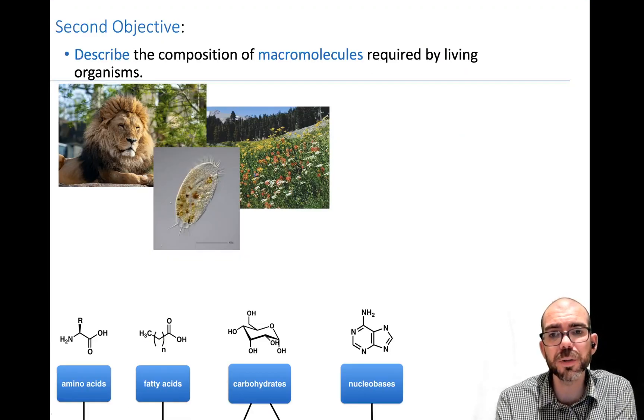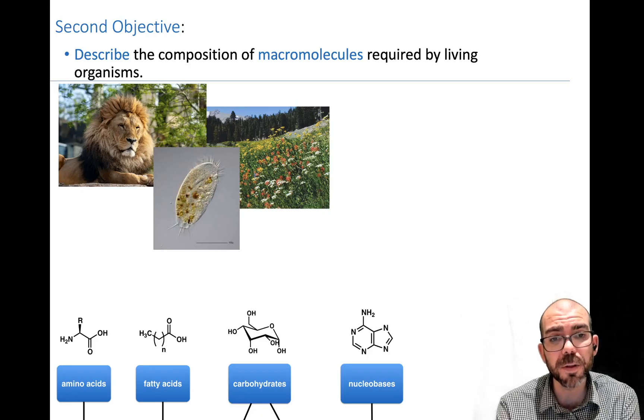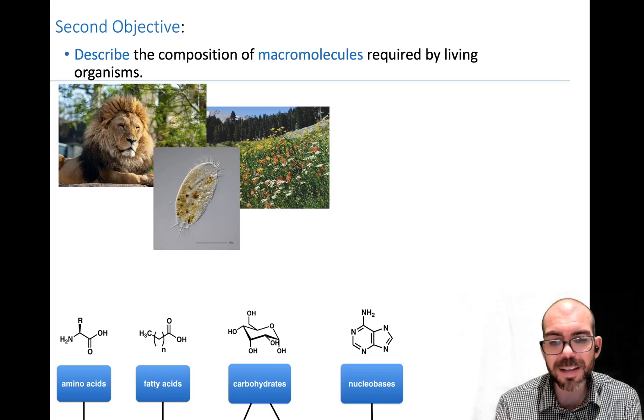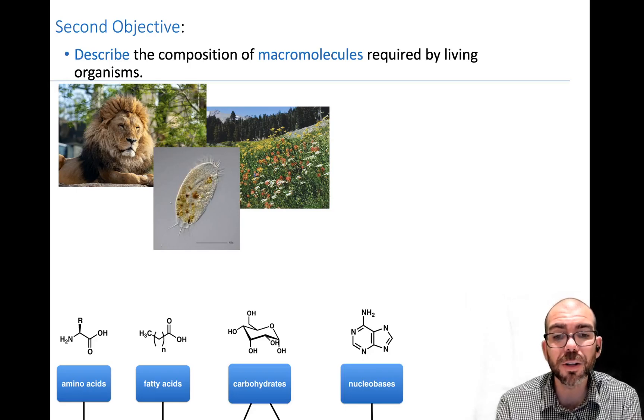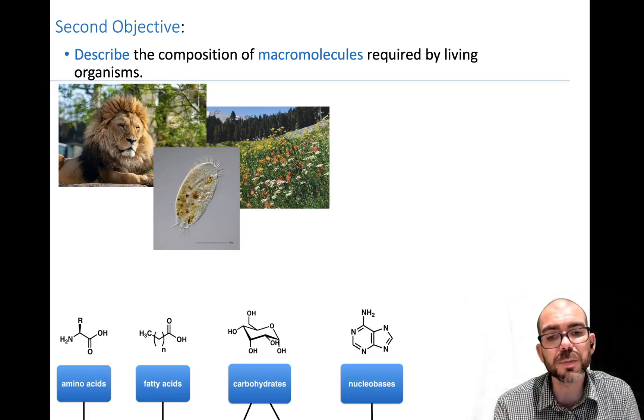Because living systems are so large, they can't be made of only atoms. They need to be made of large molecules that we call macromolecules, called this because of how large they are on the scale to a normal atom or molecule. Can we describe the composition of the macromolecules required for living organisms? What is an amino acid, fatty acid, carbohydrate, and nucleic acid made of in terms of its atoms?